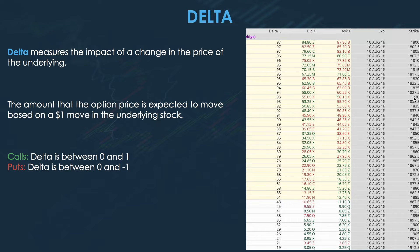If you're going to buy in the money — let's choose the $1,830 strike — the Delta is 0.93, so for every one dollar that Amazon moves up, each one of your contracts will move up 93 cents. The farther in the money you are, the higher the Delta; the farther out of the money, the lower the Delta.